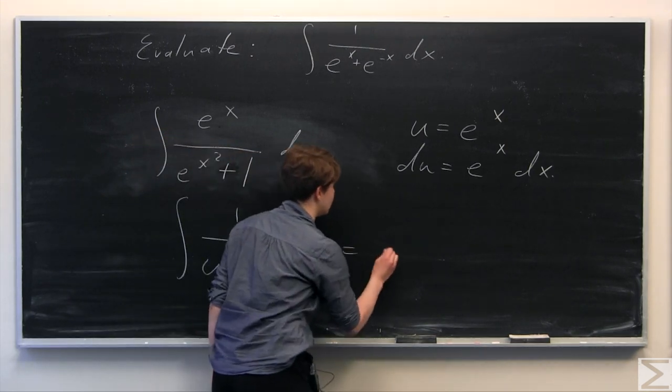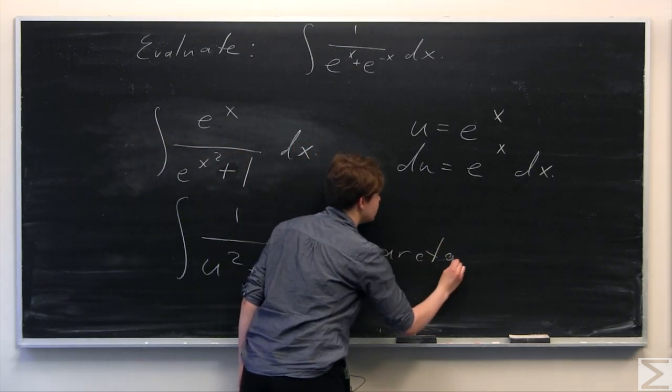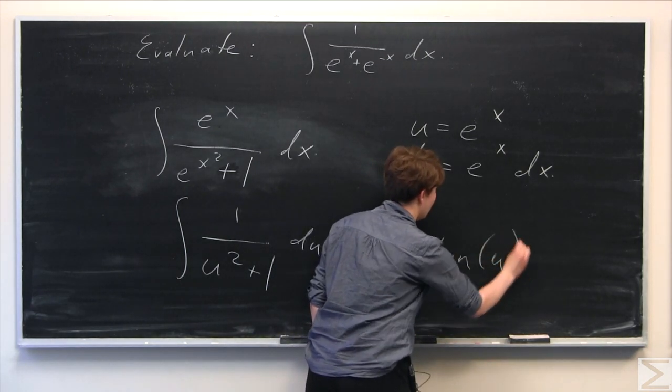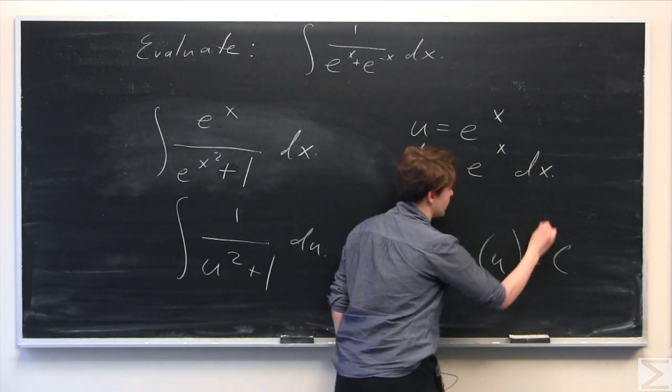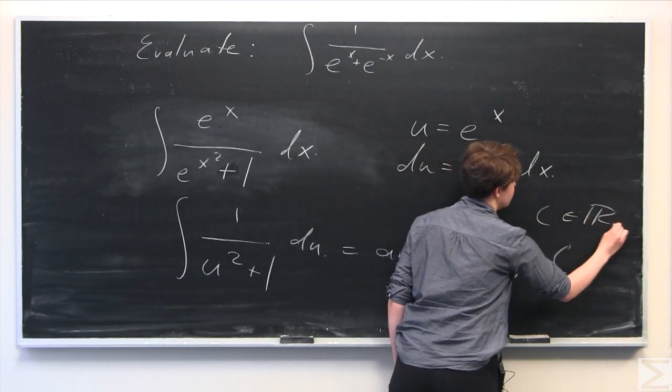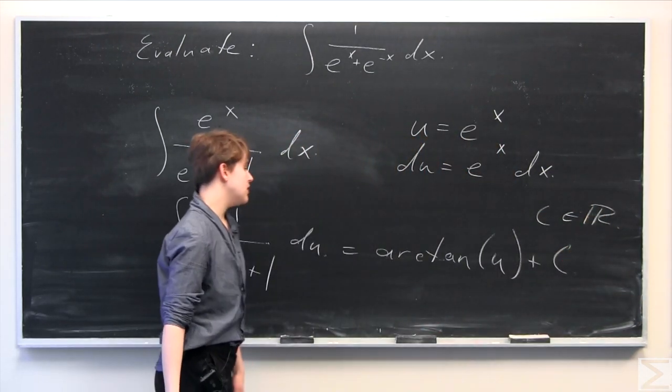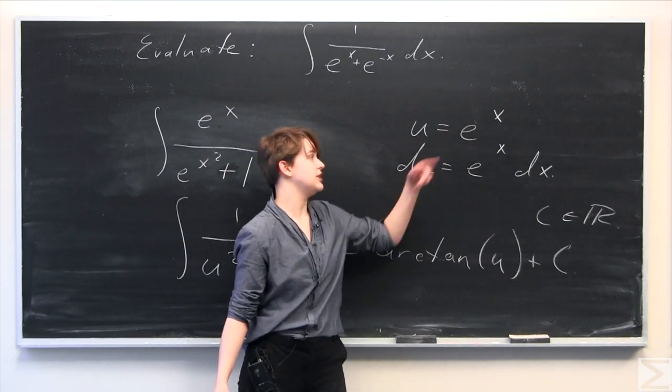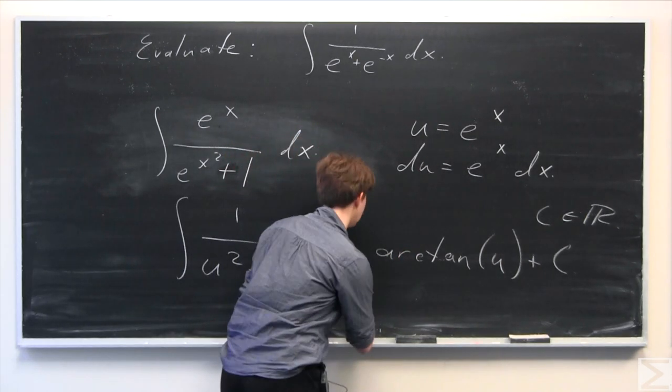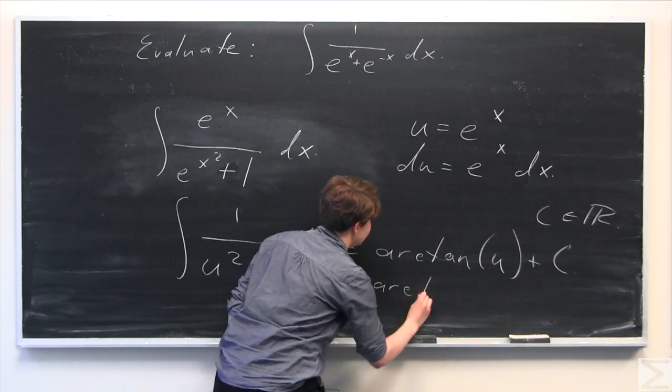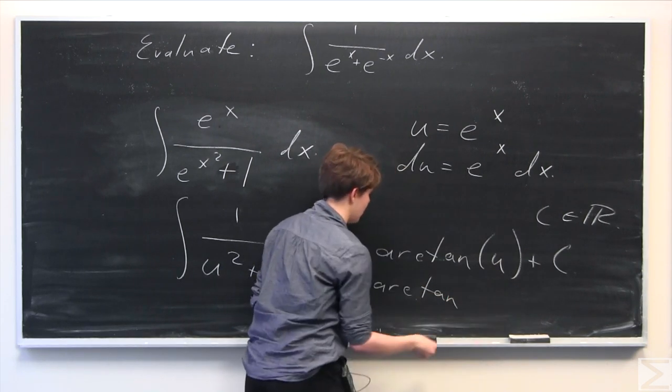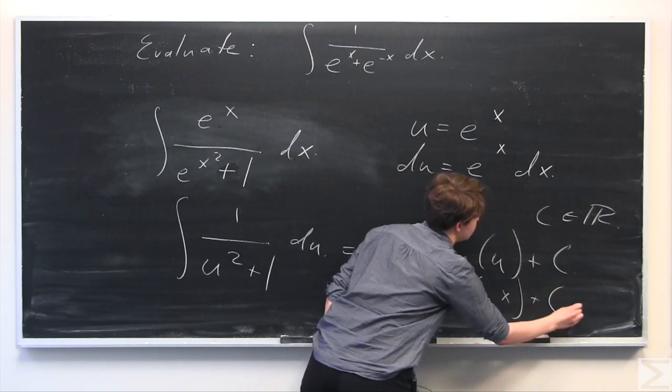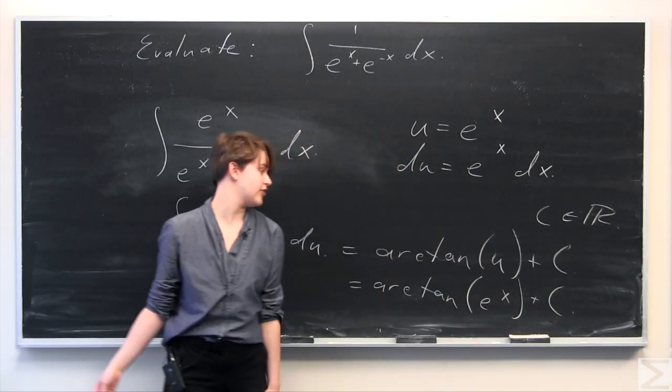So we can evaluate this integral as arctangent, or tangent to the negative 1 if you desire, of u plus some constant where c is just a real number. For our final step, we know that u is equal to e to the x, so we can just make that substitution. And so we have arctangent of e to the x plus some constant c where c is in R for our final answer.